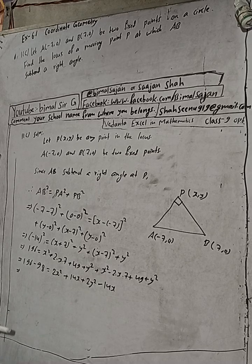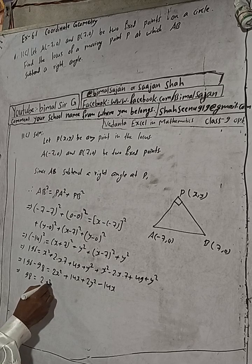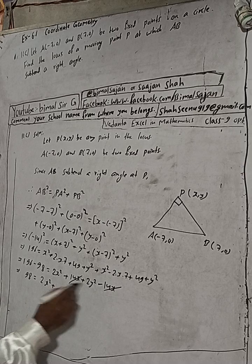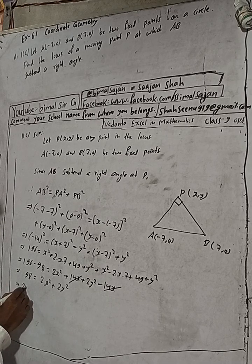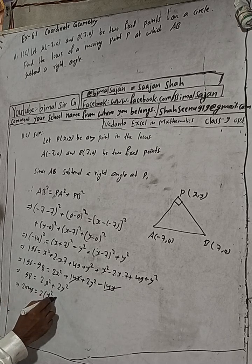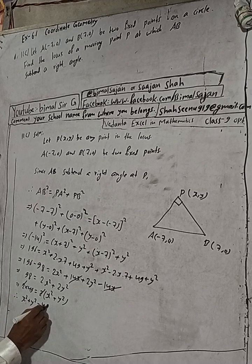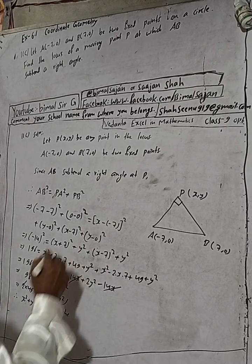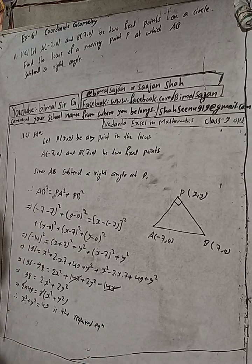Now we can take 2 as common: 196 minus 98 equals 98. So 98 = 2(x² + y²). Taking 2 common: 2 into (x² + y²) equals 98, and dividing both sides by 2, we get x² + y² = 49. This is the required equation of the locus.